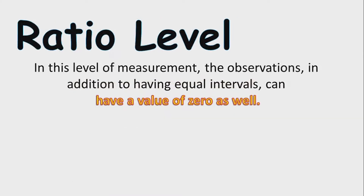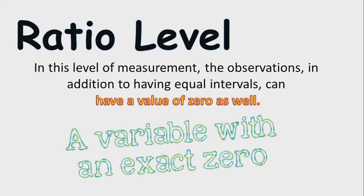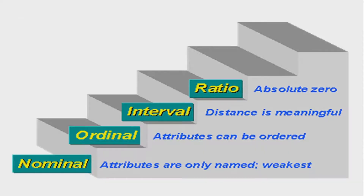Next: ratio level. In this level of measurement, the observations, in addition to having equal intervals, can have a value of zero as well — it is a variable with an exact zero. Let us review: nominal — attributes are only named; ordinal — attributes can be ordered; interval — distance is meaningful; ratio — there is an absolute zero.